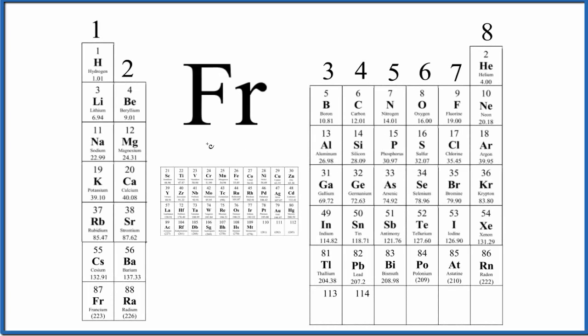There are two ways that we can figure out the number of valence electrons for Fr, that's francium. The first way is if you know this pattern here on the periodic table, it's fairly easy.